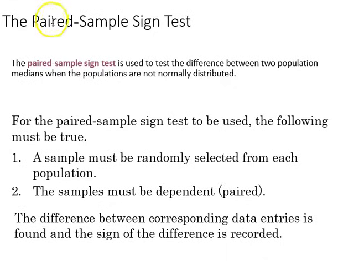Another variation on the sign test is the paired sample sign test used to test the difference between two population medians when the populations are not normally distributed. For the paired sample sign test to be used, we must meet the following. We assume that the sample is randomly selected from the population, and in this case that the samples are dependent, they're paired.